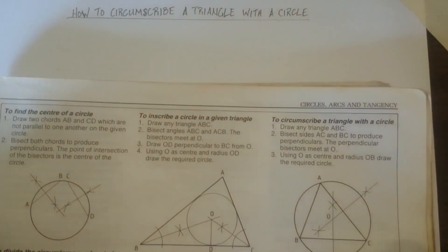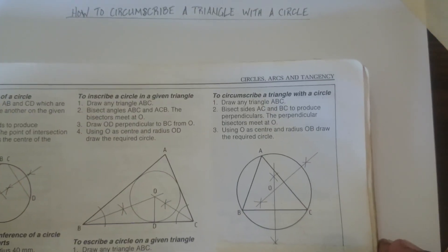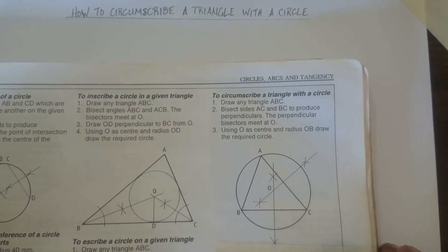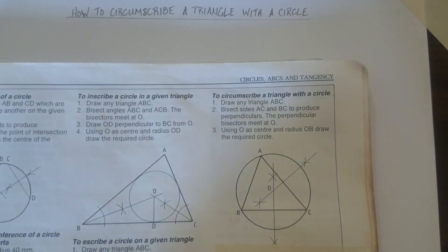Okay, welcome again. The next thing we're going to do is circumscribe a triangle with a circle. Last time we did how to inscribe a circle. We're going to circumscribe a triangle with a circle, and to do that, we're going to go through three steps.